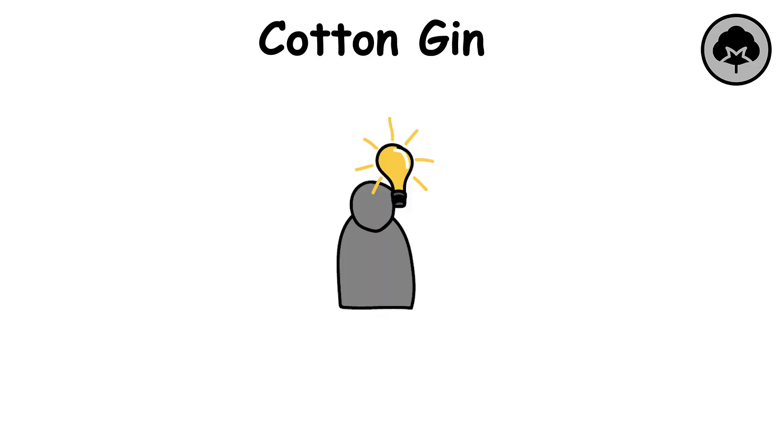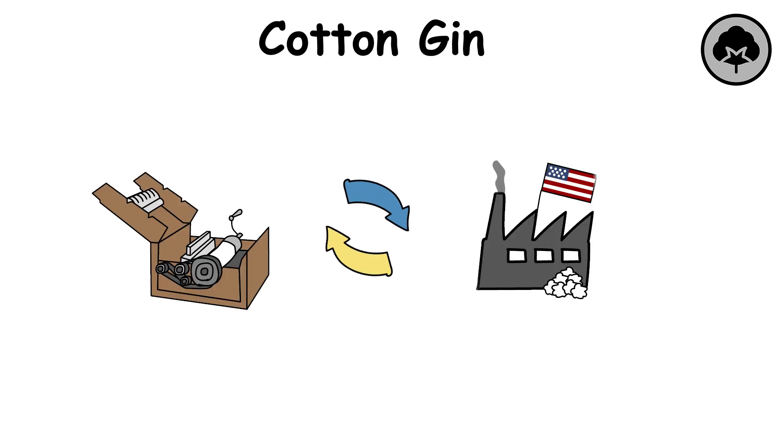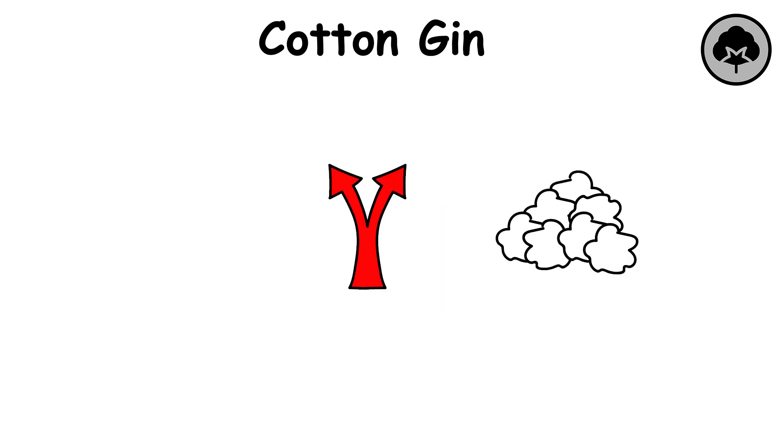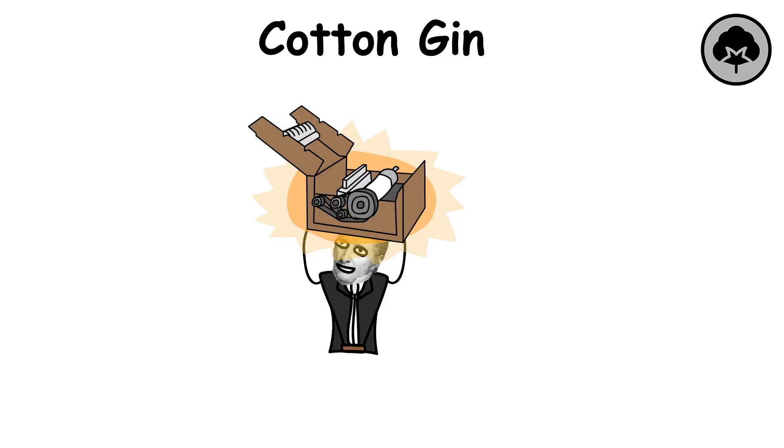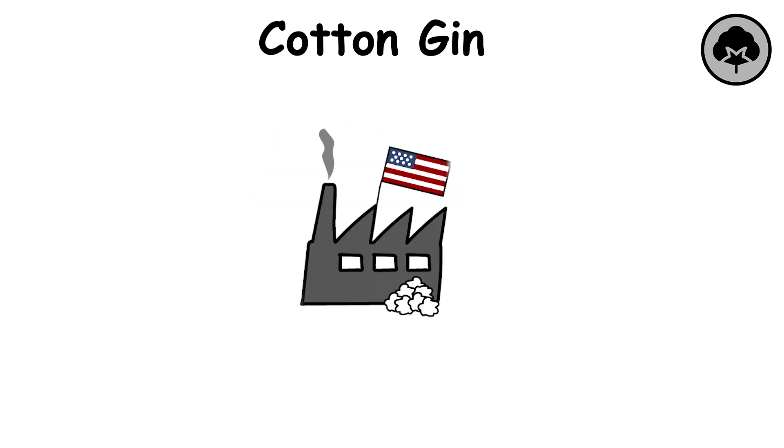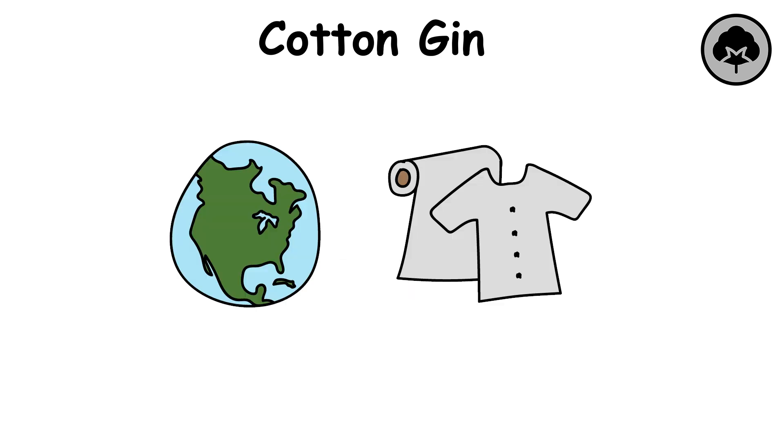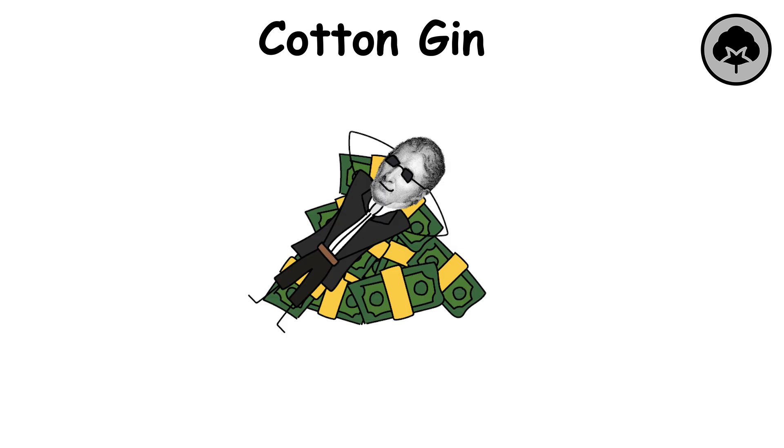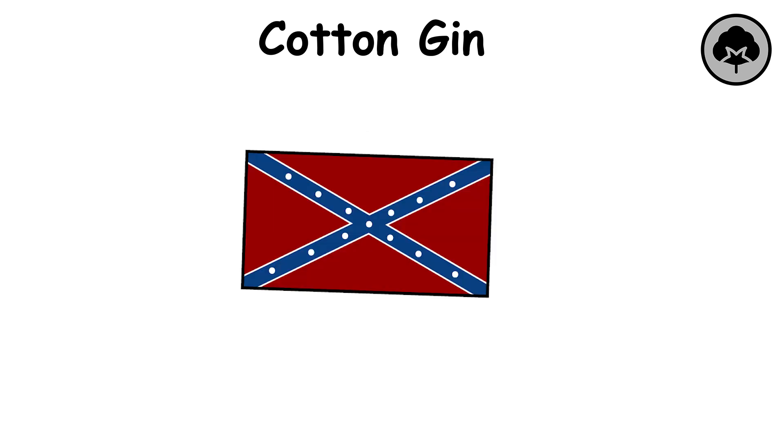Cotton Gin. Invented in 1793 by Eli Whitney, the cotton gin transformed the American cotton industry. It was a simple hand-cranked machine that quickly separated cotton fibers from their seeds, a task that previously took hours by hand. This invention made cotton production far more efficient and profitable, helping the U.S. become a global supplier of textile material. However, by making cotton farming more profitable, it greatly increased the demand for enslaved labor in the American South.